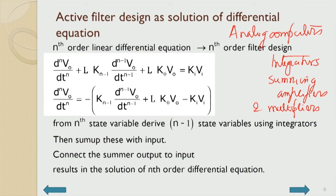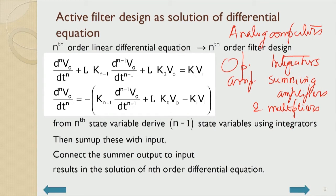Resistors and capacitors form the integrators; summing amplifiers and multipliers are the necessary blocks of the analog computer. It was used in electrical engineering, particularly in control systems for simulation. Later, with transistors, the size of the analog computer came down drastically, and the op amp became the active device used for building all these blocks.